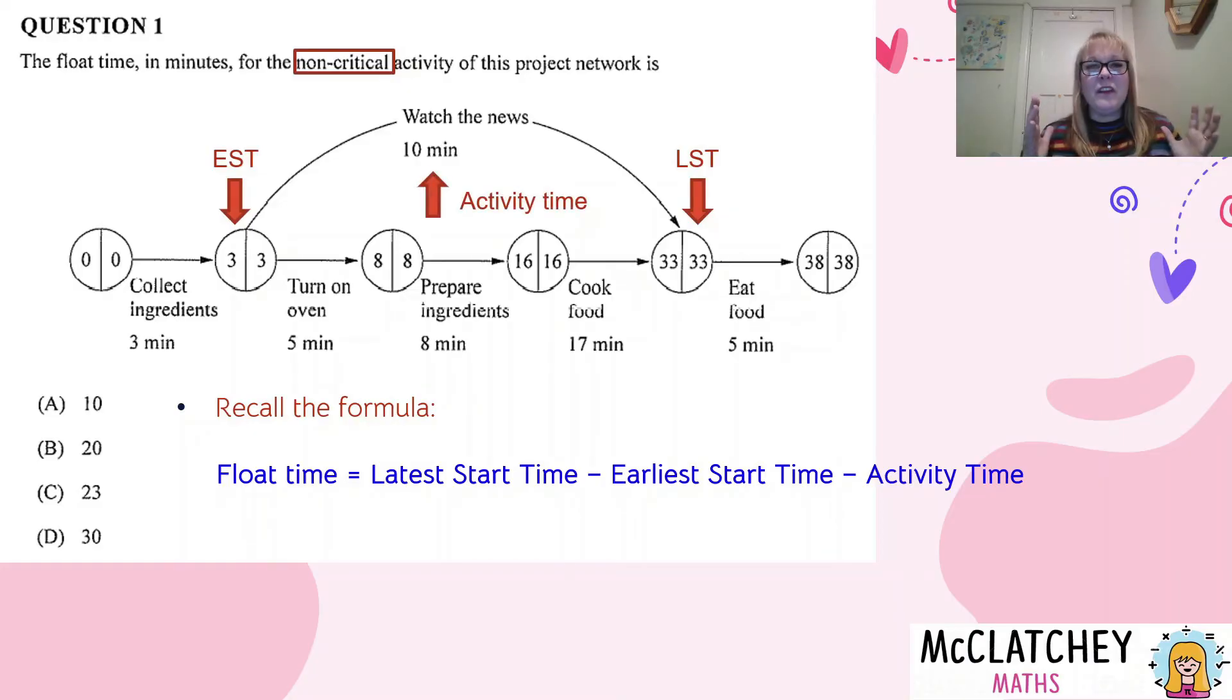A nice, easy way that I remember this is if we look at this latest start time here, it's the outside of that activity. And then the other sides outside of the activity take away the middle, how long the activity takes. So what we've got is 33 take away 3 take away 10, which gives us a float time of 20 minutes.